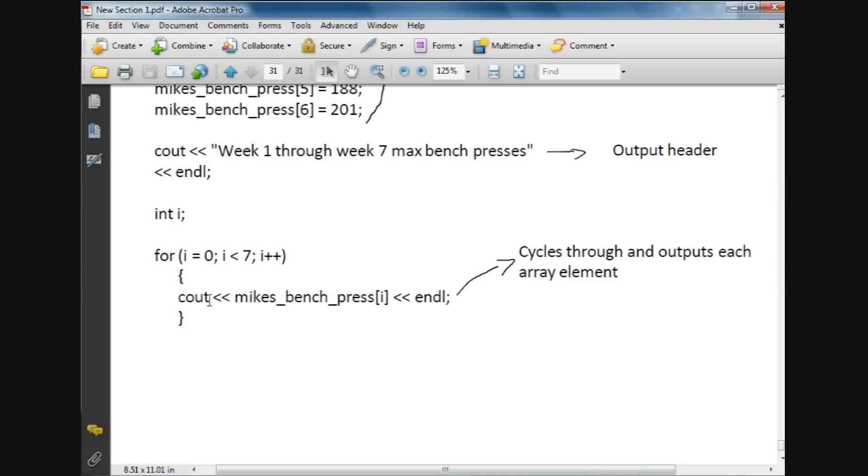Then we just have a very easy output. Again, array name, and then we're using the i that we created here—the integer. So the first time through, this is going to be 0, so it'll print out the value in the 0 element position, and then on to 1, into 2, into 3, and so on throughout.